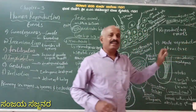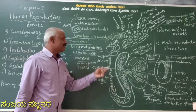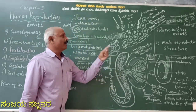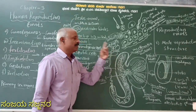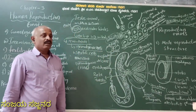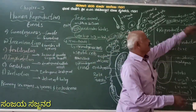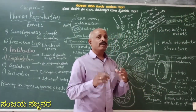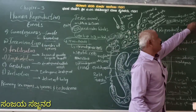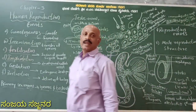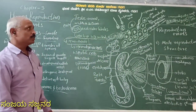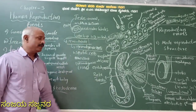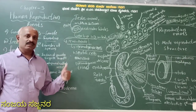Immunologically competent cells are also present. Blood vessels, Leydig cells, and immunologically competent cells are present here. The function of Leydig cells is most important: they are helpful for the secretion of hormones called androgens, including testosterone.